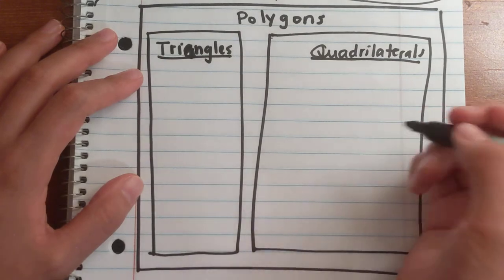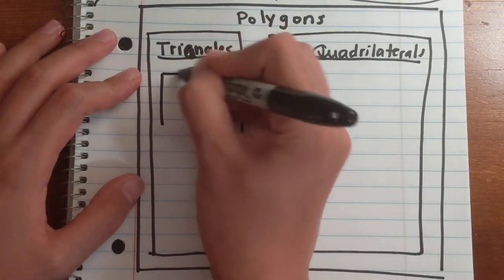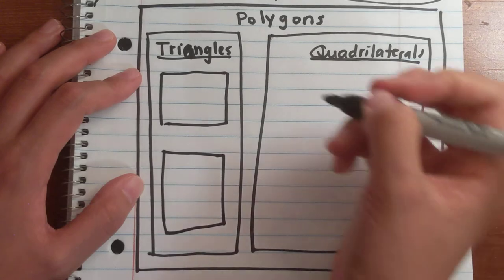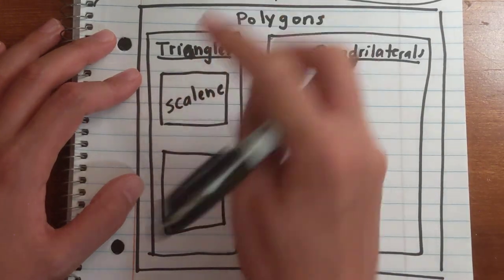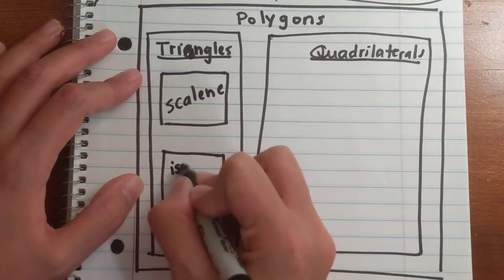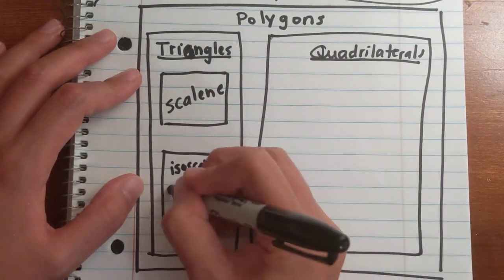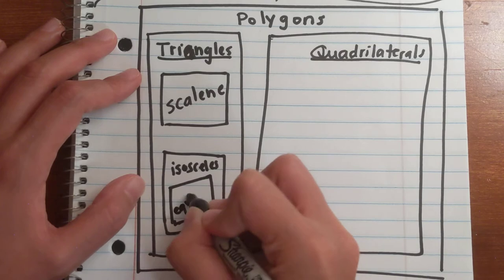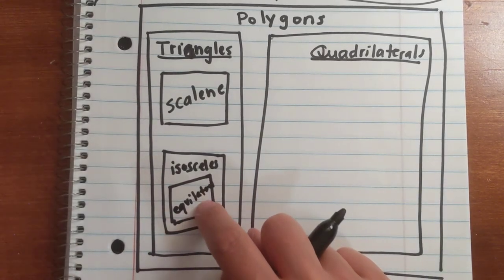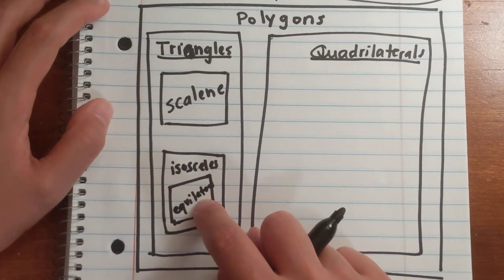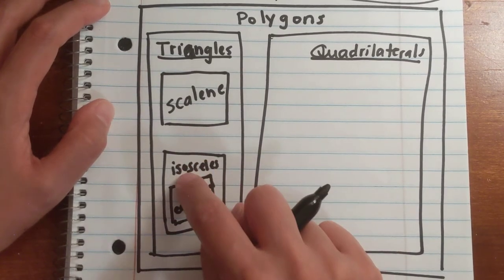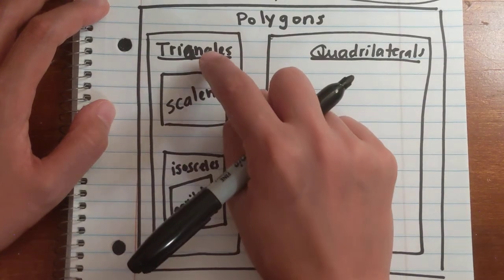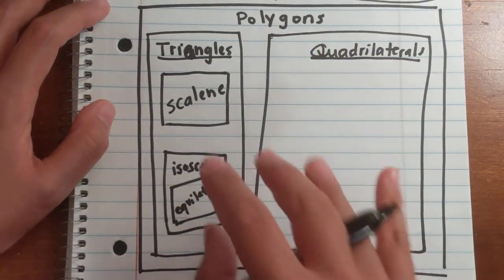Let's box out the triangles and focus on side names. The two types of triangles in fifth grade that describe side names are scalene and isosceles. A scalene triangle has three sides that are unequal. An isosceles triangle has at least two sides that are equal. Then you have the equilateral triangle — all sides are equal. An equilateral triangle is an isosceles triangle because isosceles means at least two sides are equal. An isosceles triangle is a triangle, and a triangle is a polygon. That's how subcategories work.